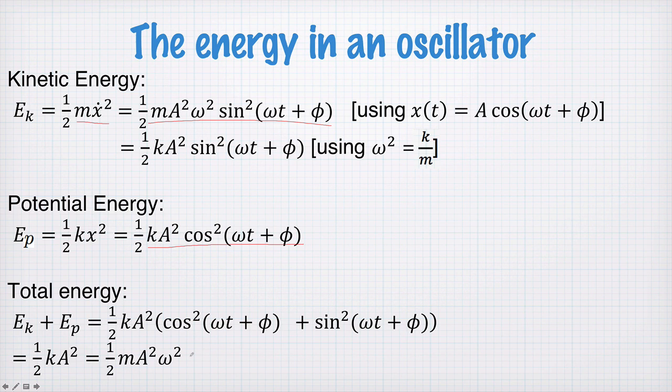Leaving us with an expression for the total energy as half k A squared or half m A squared ω squared. And that's just rearranging the k to be equal to m ω squared here. So these are two different ways of expressing the total energy in an oscillator.